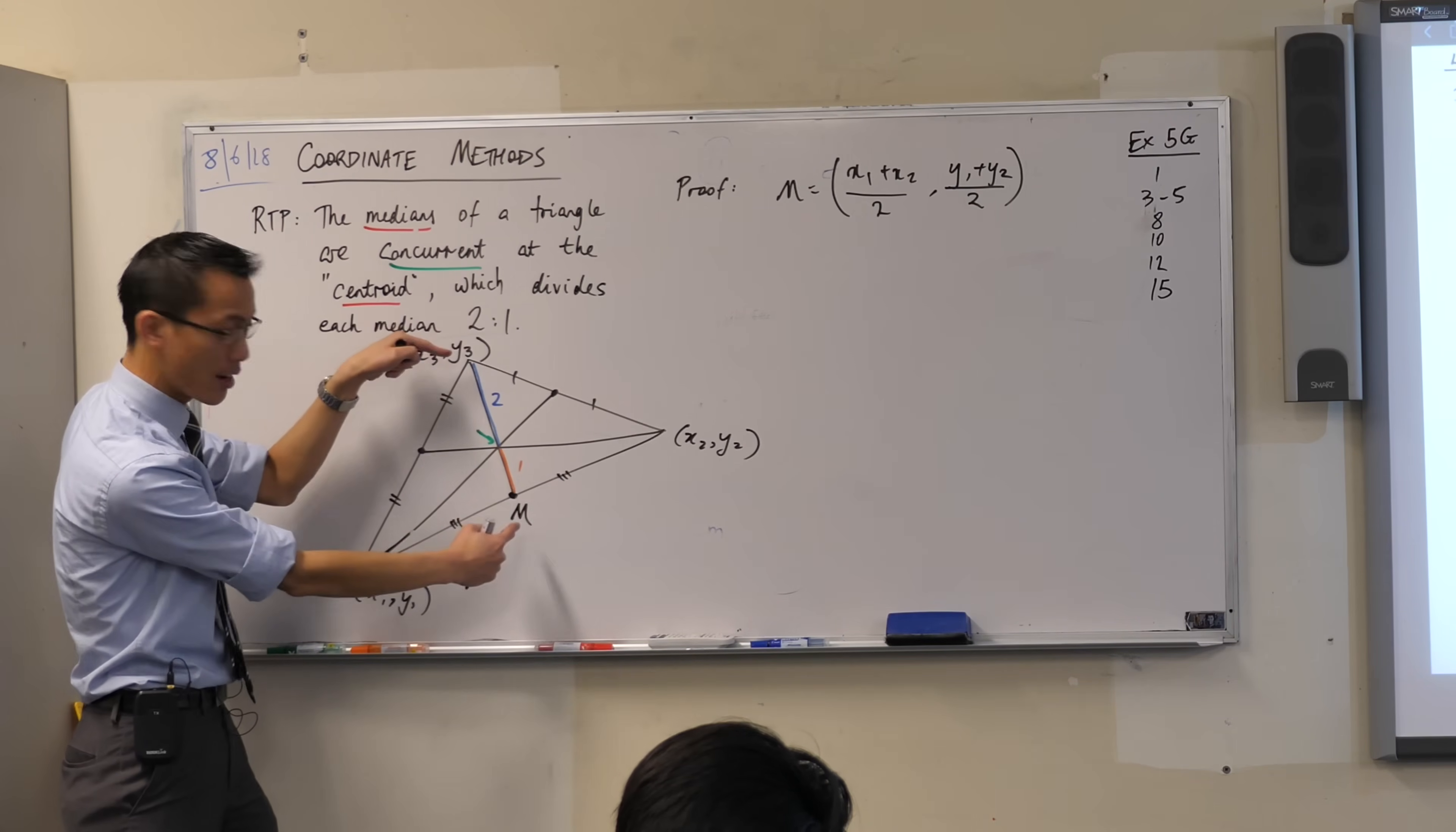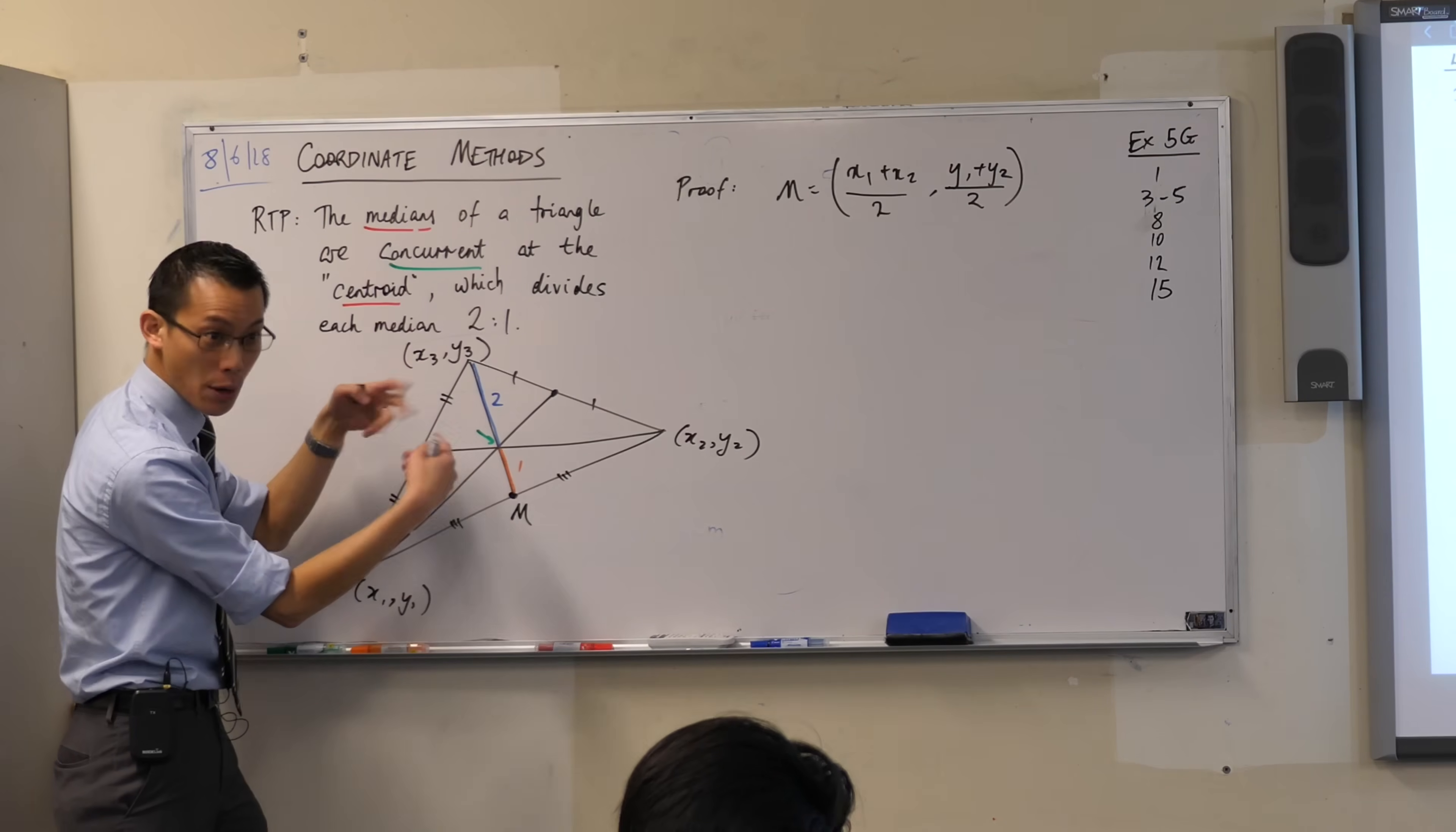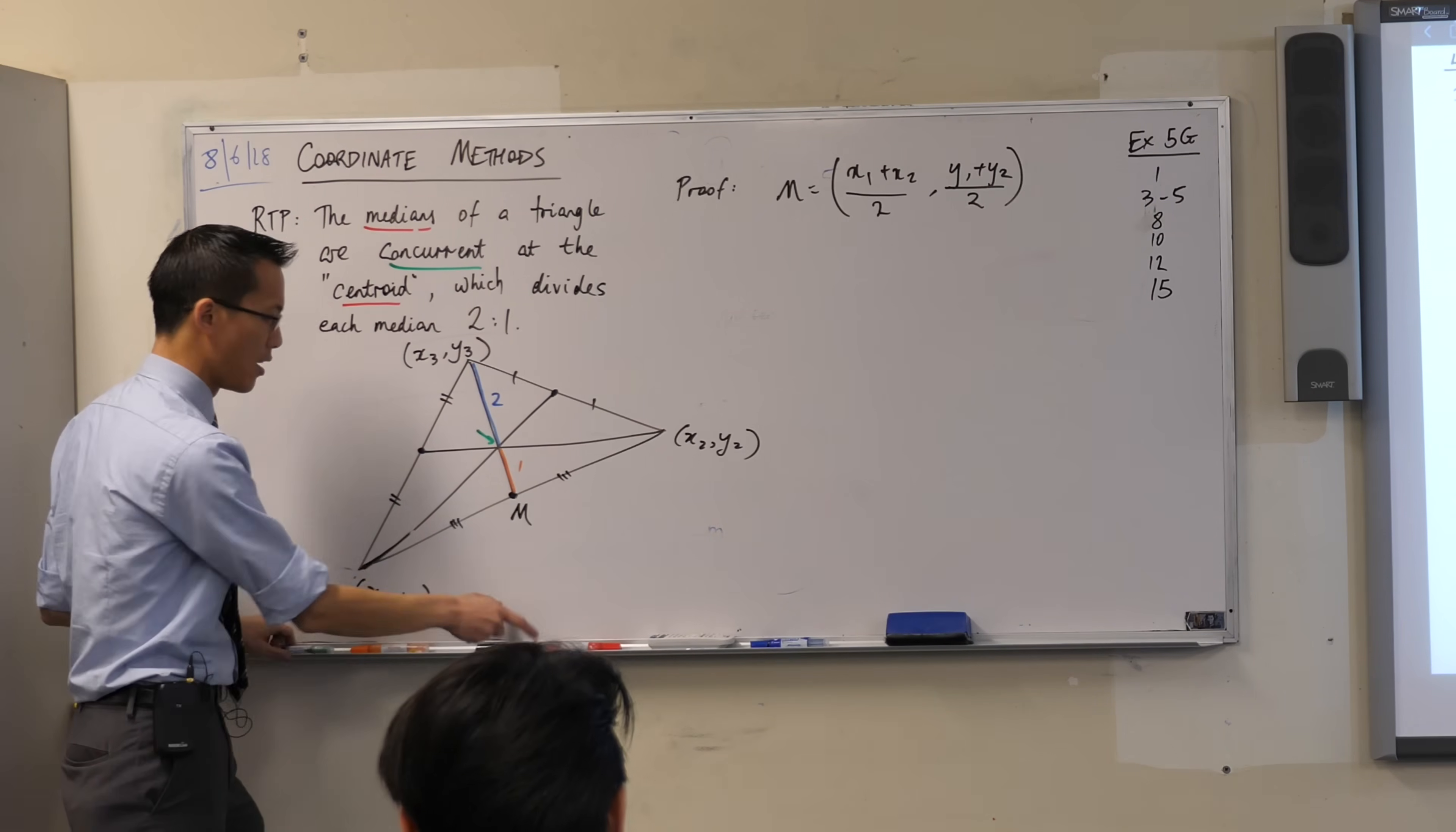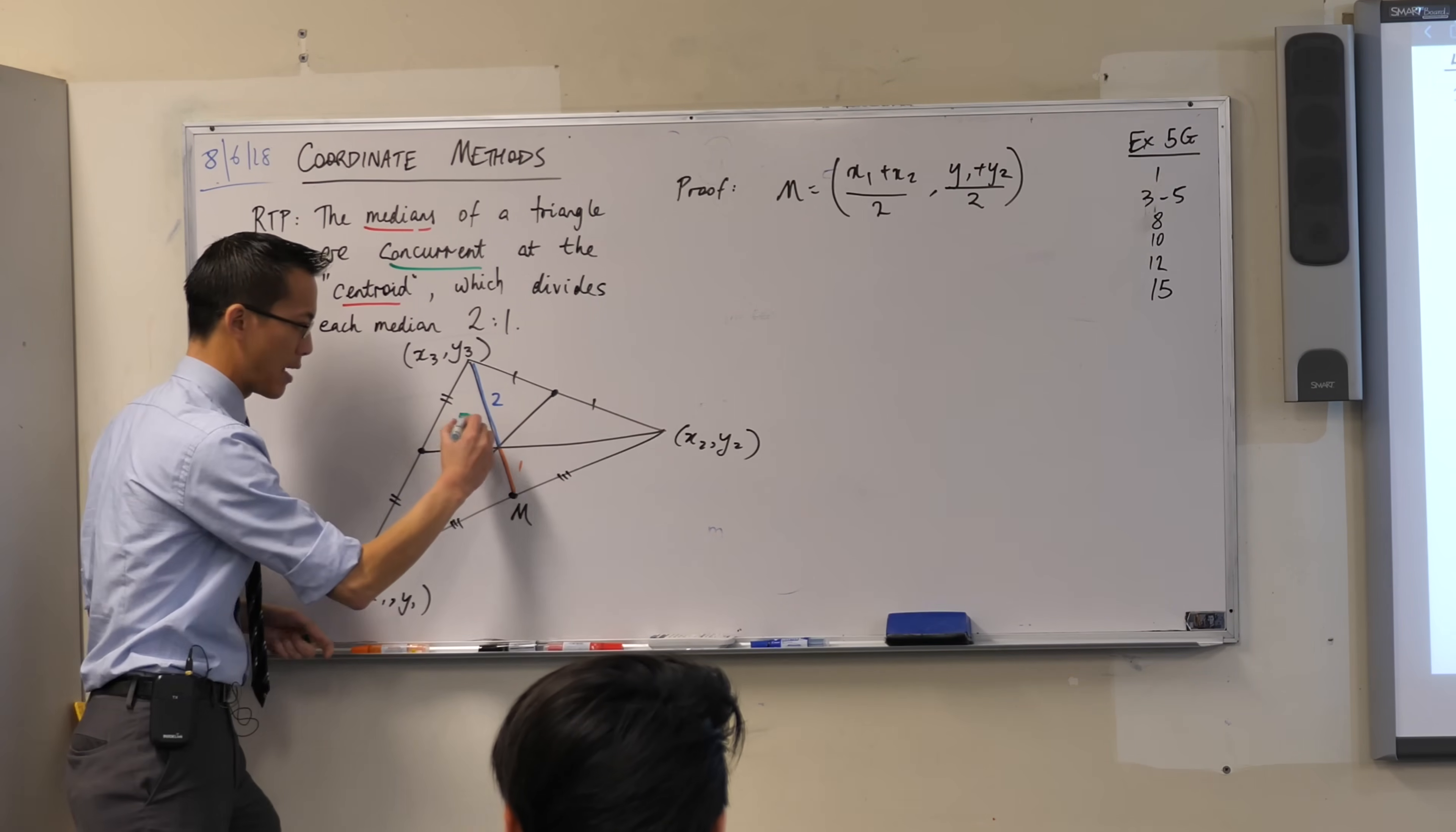Let's see what happens if I divide it up 2 to 1. You have a formula for this, right? Let's call the centroid, that point, let's call it P for point.